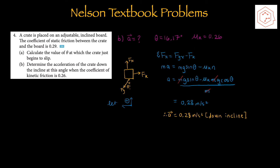For part b, determine the acceleration of the crate down the incline at this angle when the coefficient of kinetic friction is 0.26. Using theta = 16.17° from the previous part and mu k = 0.26, the same free body diagram applies with subscript k replacing s. Since there's only acceleration in the x component, ma = mg sin theta minus mu k times N. Isolating for acceleration and plugging in all numbers gives acceleration = 0.28 m/s² down the incline.